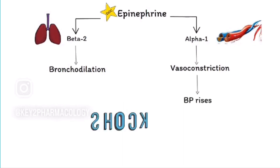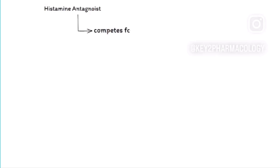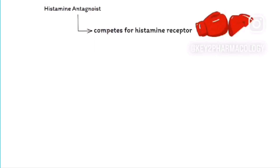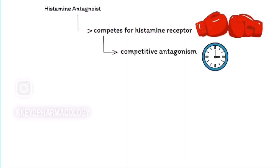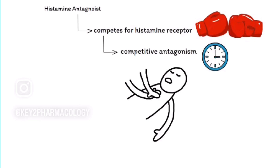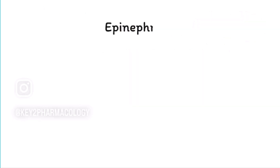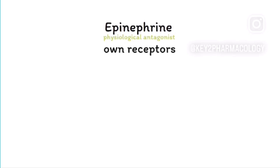Why don't we use a histamine antagonist? Because a histamine antagonist would compete with histamine at the receptor, and competitive antagonism always takes a longer time. Epinephrine, by contrast, is a physiological antagonist — it acts on its own receptors, not on histamine receptors.